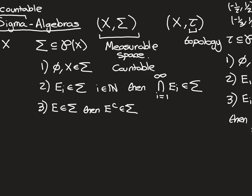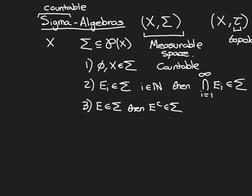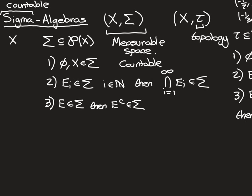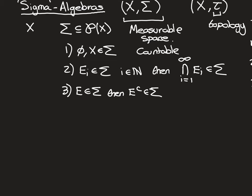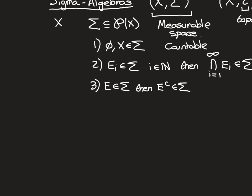Just with regards to union: we saw how in the case of an algebra, properties two and three together imply the algebra is closed under finite union. If it's closed under finite intersection and closed under complement, then by De Morgan's laws it's also closed under finite union. The same applies to sigma algebras: closure under countable intersection and closure under complement together imply closure under countable union. This is similar to the third property of a topology, but not as strong — ours is only countable unions, not uncountable. Let's prove this.